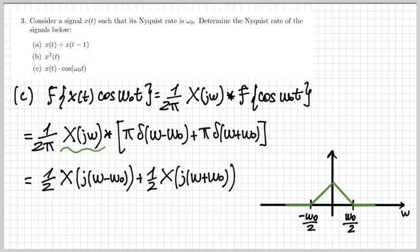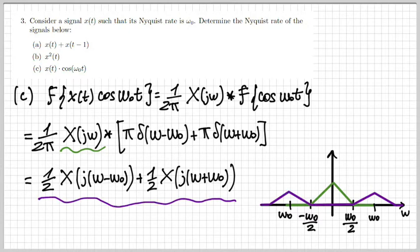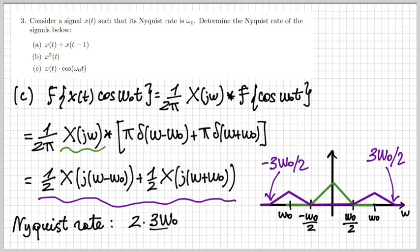If the original signal has maximum frequency ω₀/2 (since the Nyquist rate is ω₀), then after modulation we get two replicas with half the amplitude shifted by ±ω₀. The maximum frequency is now ω₀ + ω₀/2 = 3ω₀/2, so the Nyquist rate must be twice that: 3ω₀.